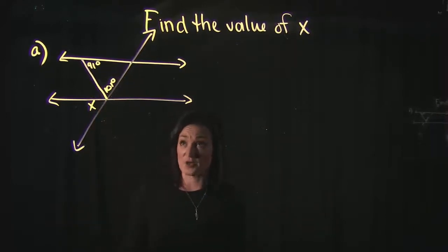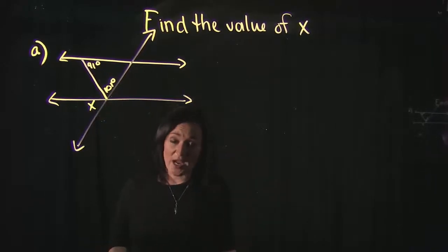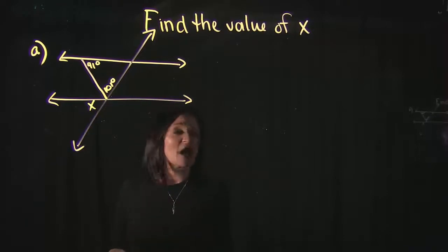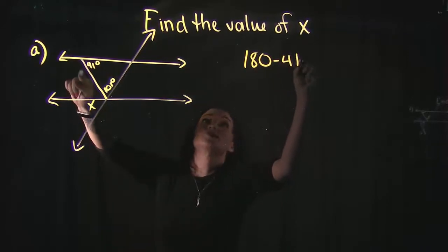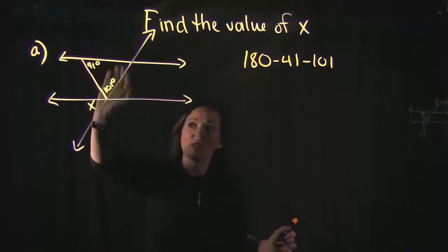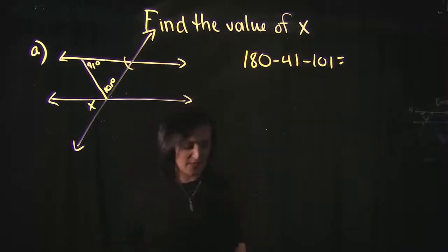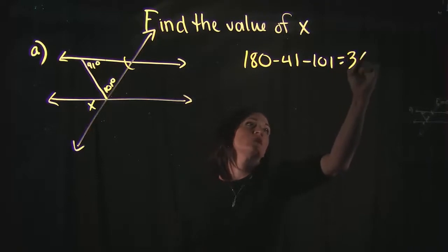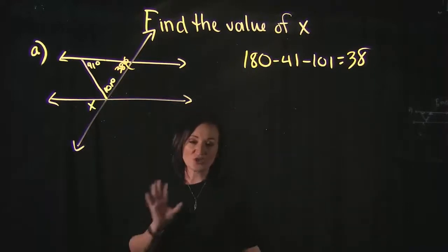We know that the angles of a triangle add up to 180 degrees. If we know two of the angles, we can find the third by subtracting. So we take 180 minus 41 minus 101, which leaves us with 38. That tells us this third angle of the triangle is 38 degrees.